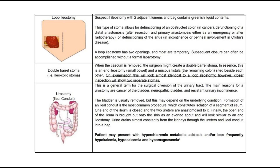Lastly, urostomy is a general term for the surgical diversion of the urinary tract. The main reasons for a urostomy are cancer of the bladder, neuropathic bladder, and resistant urinary incontinence. The bladder is usually removed depending on the underlying condition. Formation of an ileal conduit is the most common procedure, which involves isolation of a segment of ileum. One end of the ileum is closed and the two ureters are anastomosed to it. Finally, the open end of the ileum is brought out onto the skin as an everted spout and will look similar to an end ileostomy. Urine drains almost constantly from the kidneys through the ureters and ileal conduit into a bag.